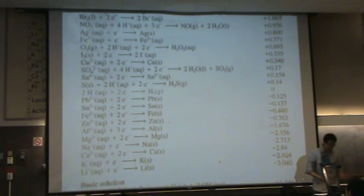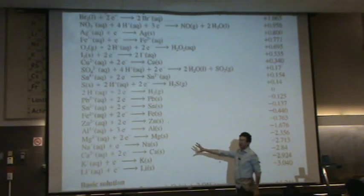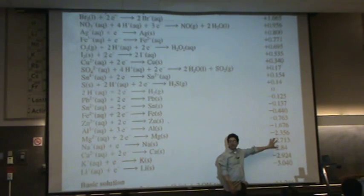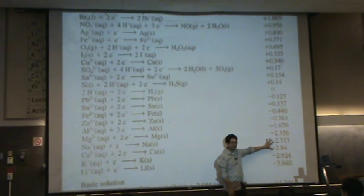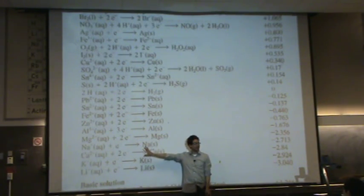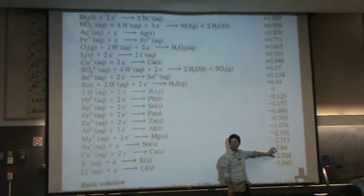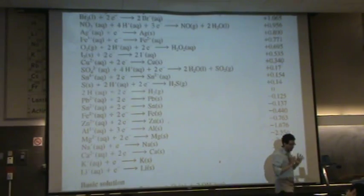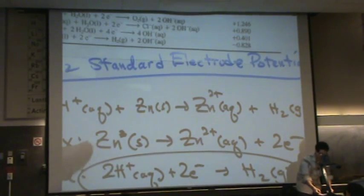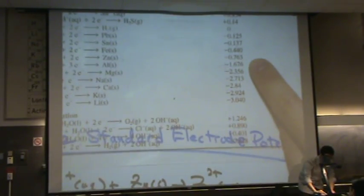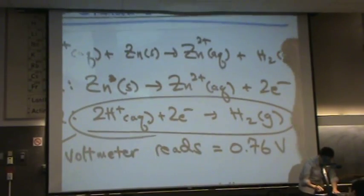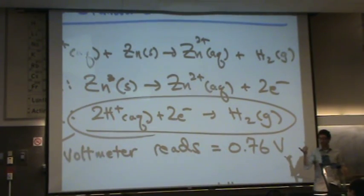Now notice this is negative, where I gave you a positive answer before. Whenever you flip a reaction, you're going to flip the E potential. So if you flip this reaction over and make it oxidation, this sign is going to flip over. So remember that. So note here, I have this zinc reaction written backwards. In my table, it's 0.763 negative. Well, I get a positive answer because it's flipped. And you'll see me do that a number of times.